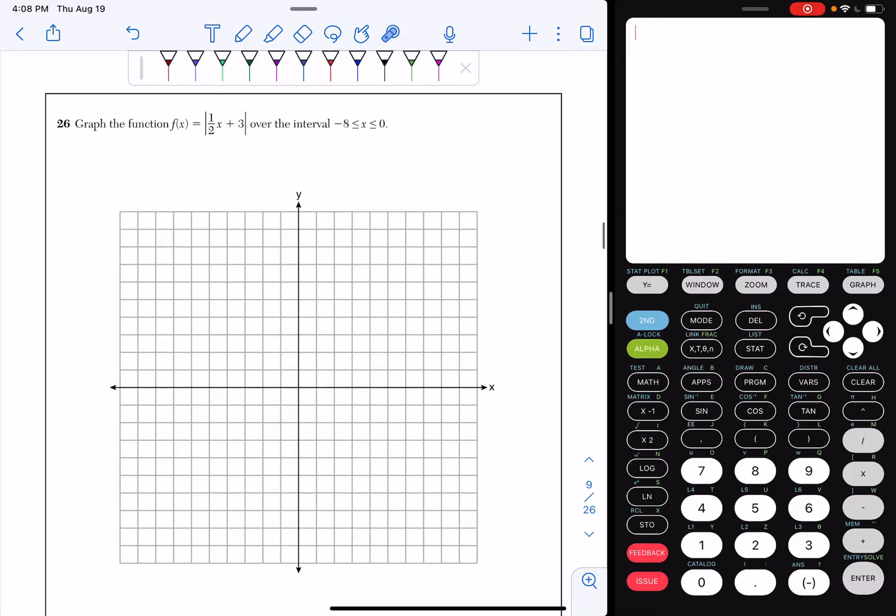Number 26, graph the function f of x equals the absolute value of 1/2 x plus 3 over the interval negative 8 less than or equal to x less than or equal to 0.